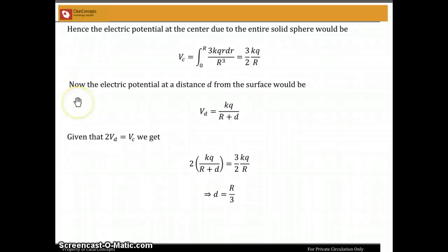Now again, the electric potential at a distance d from the surface, since this point is outside the surface again, all the charge acts as though it were at the center. And so that would just be V subscript d equals kq by R plus d.